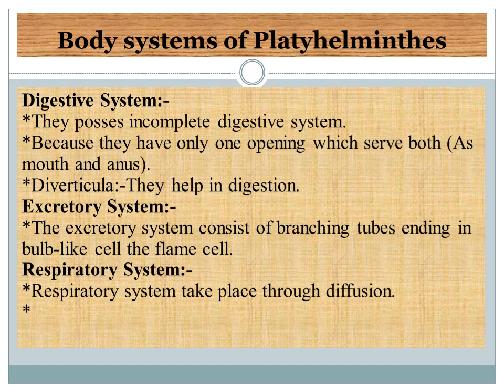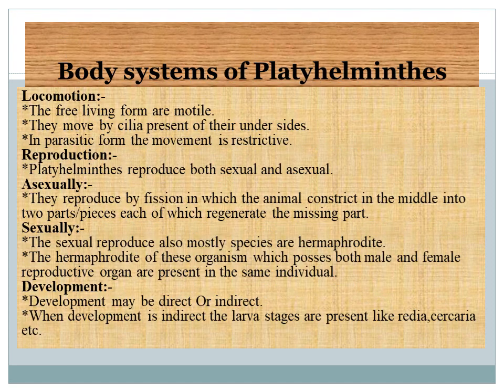Excretory system of Platyhelminthes: the excretory system consists of branching tubes ending in bulb-like cells known as flame cells. Respiratory system: they have no respiratory organs, but respiration takes place through the process of diffusion — the movement of molecules from higher concentration to lower concentration. Locomotion: free-living forms are motile and move by cilia present on the underside of the body.